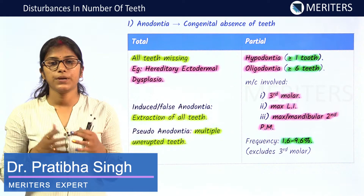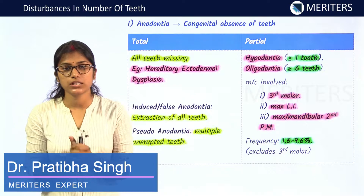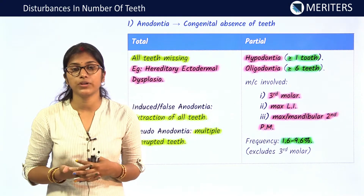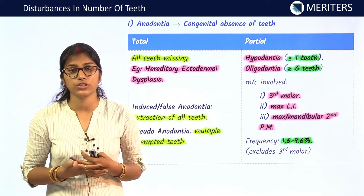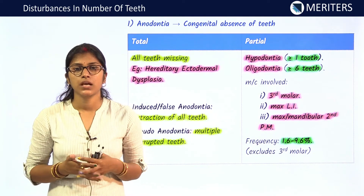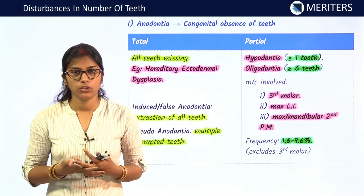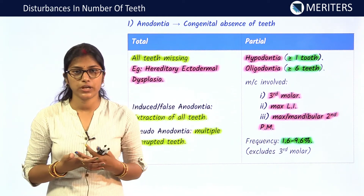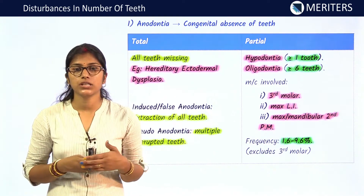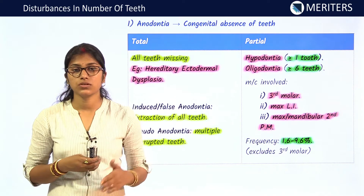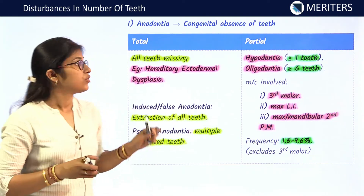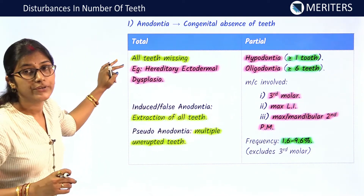In this video, I'll be discussing disturbances in number of teeth — specifically oligodontia, hypodontia, anodontia, and supernumerary teeth. I'll also cover important questions which may appear from this topic, important terminology, and genes associated with these abnormalities. Now we start with anodontia.